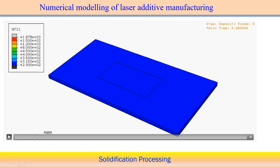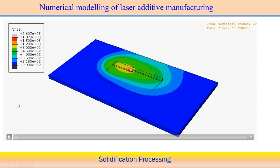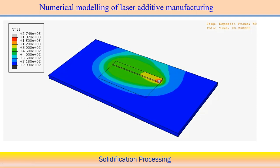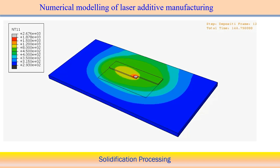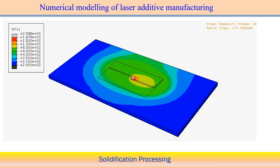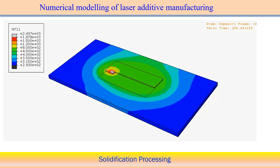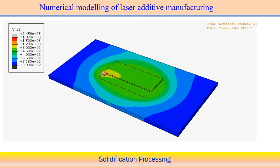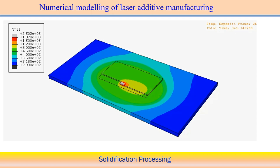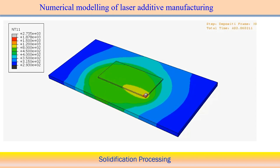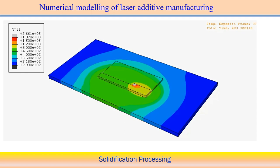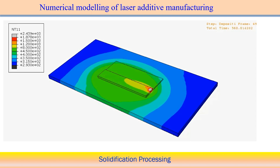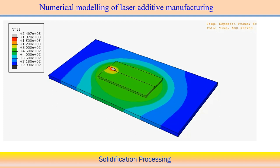Another simulation for wire arc additive manufacturing shows a different path strategy, gradually filling the area. Speed can also be controlled during deposition — processing speed can be high or slow depending on requirements and other issues associated with additive manufacturing deposition.